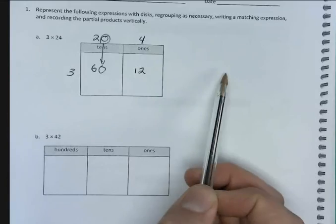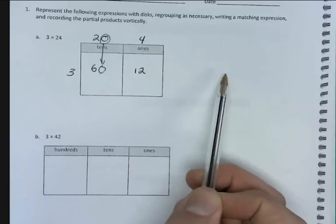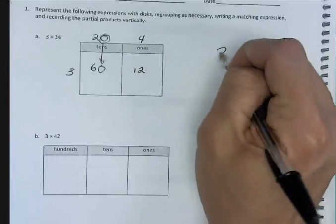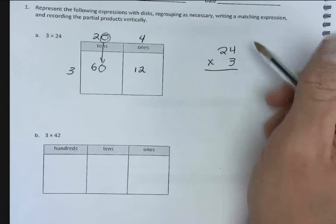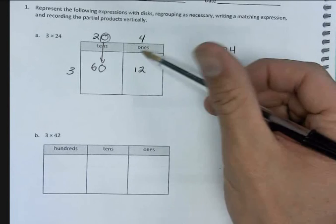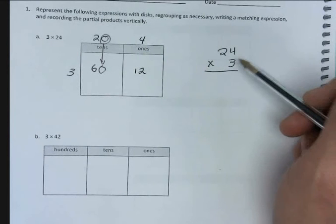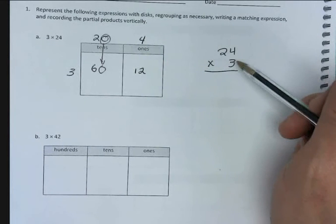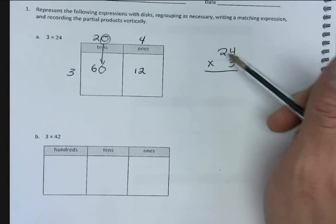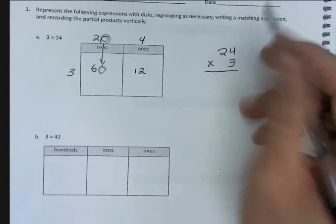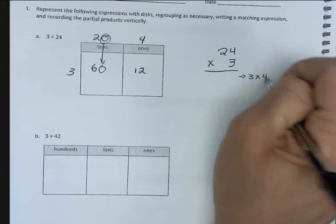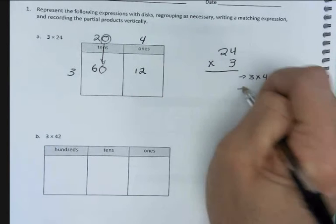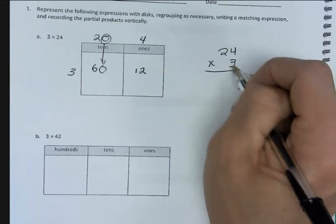Now over here in this space, we're going to draw our partial products. So we have 24 times 3. Partial products is basically this exact same thing, just written out in problem form. What we're going to do is our ones place first, then our tens place.